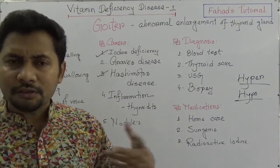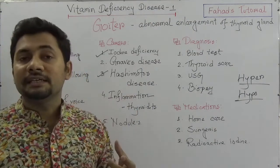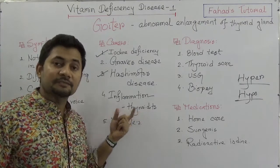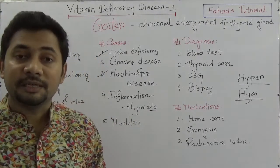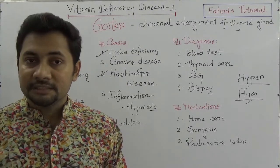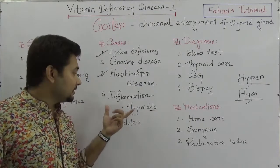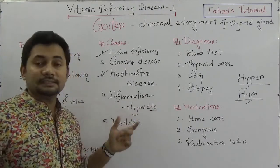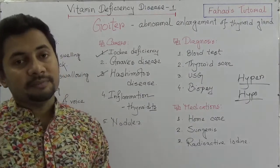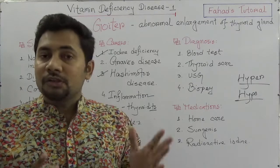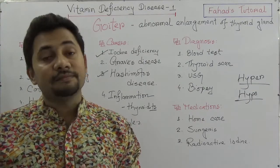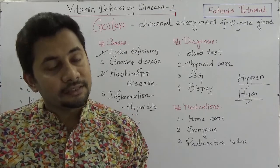Another cause is inflammation of the thyroid gland, which is called thyroiditis — similar to how liver inflammation is called hepatitis. This is like a viral thyroiditis, and it is distinct from Hashimoto's disease. Nodules in the thyroid can also be another cause of goiter. So if asked the main cause, the simple answer is iodine deficiency.